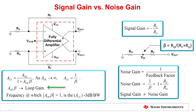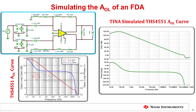The term AOL times beta is called the loop gain, and is an important factor when determining the phase margin and stability of the op amp or FDA. A SPICE simulator such as TINA-TI is very useful in determining an amplifier's stability. The main factors affecting amplifier stability are the open loop gain or AOL, the feedback factor beta, and the amplifier's open loop output impedance, typically represented by ZOL.